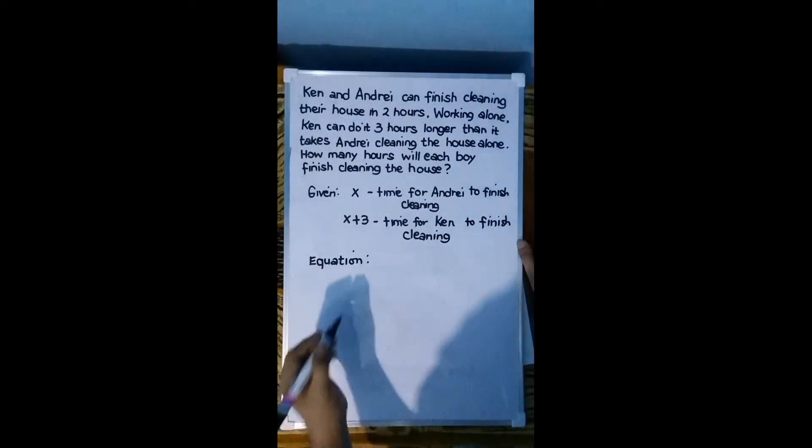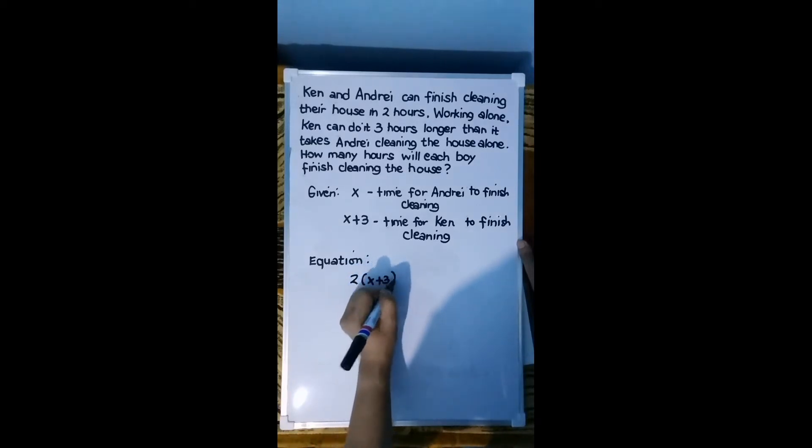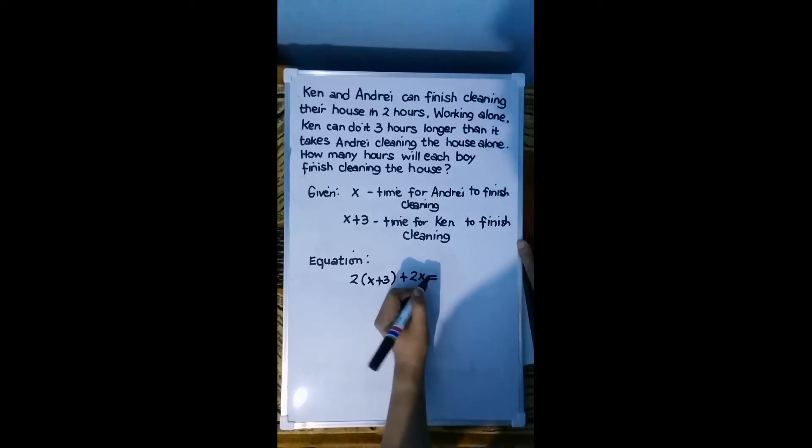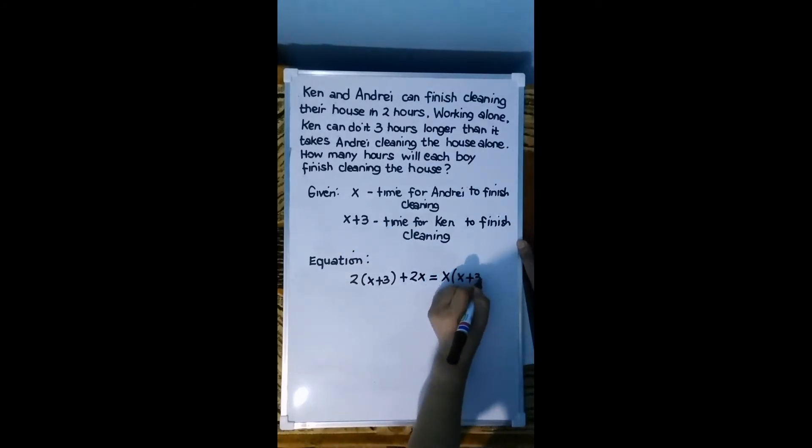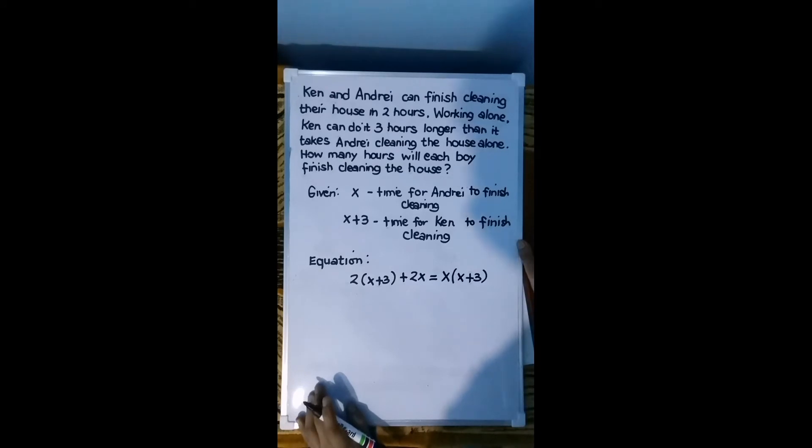we can write it as 2 times (X+3) plus 2X is equal to X times the quantity (X+3). So this will be our equation: 2(X+3) + 2X = X(X+3).